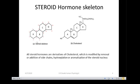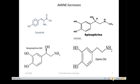Most of the hormones of the hypothalamus and the anterior pituitary glands are protein hormones. The steroid hormones have a steroid skeleton and they all come from cholesterol, which can be synthesized or obtained from diet. This steroid skeleton is common to all steroid hormones — it has three cyclohexyl rings (A, B, C) and one cyclopentyl ring. All steroid hormones are derivatives of cholesterol, modified by removal or addition of side chains, hydroxylation, or aromatization of the steroid nucleus.